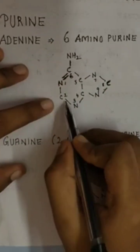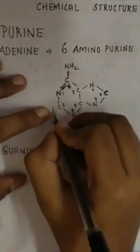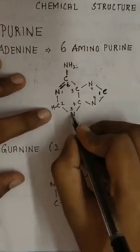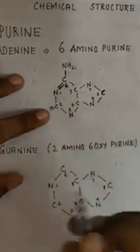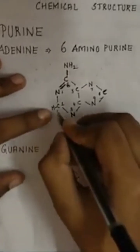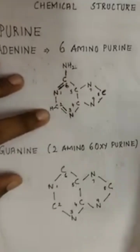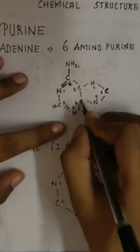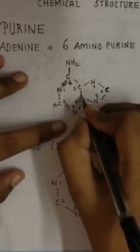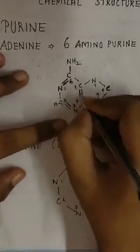For this carbon: 1, 2 — we need another 2 bonds, so we will add H over here. For this nitrogen: 1, 2 — we need another bond, so for these two we can commonly put a bond over here. Next carbon: 1, 2, 3 — we need another bond, so we can put it over here.